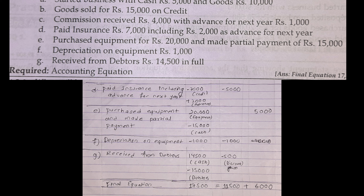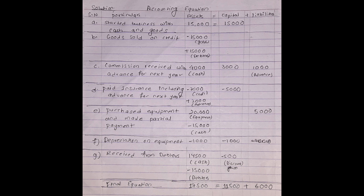Receipt from debtors of Rs. 14,500 in full settlement of Rs. 15,000. So there is a discount of Rs. 500. If you receive Rs. 14,500 with the discount, capital is minus Rs. 500. Final equation: Assets = 7,500, Capital = 11,500, Liabilities = 6,000, with discount minus Rs. 500.